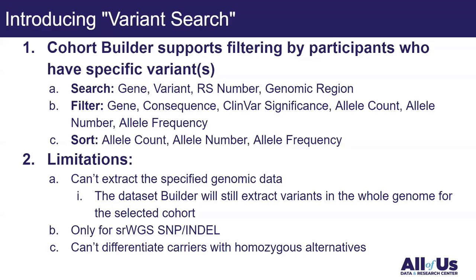There are some limitations. When you search for a specific region, the dataset builder will still extract variants across the whole genome for the selected cohort — the new feature only allows you to define your cohort in a more advanced way. Additionally, the variant specification only applies to SNPs and indels in short-read whole genome sequencing data, not to array data, long-read data, or structural variants.